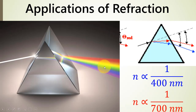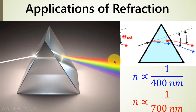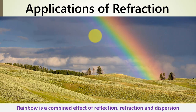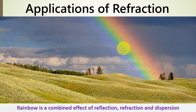We have this phenomenon where white light splits into its individual constituent colors in a band of colors. In nature, we also observe this splitting of color and we call it a rainbow.